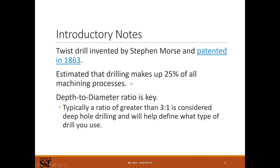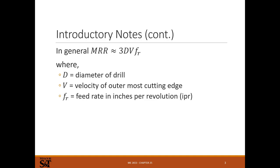About 25% of machining operations involve hole making. Depth to diameter is key — anything greater than 3 to 1, you usually have to pay a little more attention. You certainly wouldn't use an end mill to drill anything with an aspect ratio of more than 3 to 1. Material removal rate can be approximated as 3 times drill diameter times velocity at the cutting edge times feed rate in inches per revolution. It's usually fairly slow compared to milling or turning.